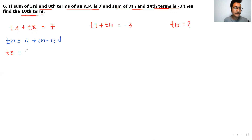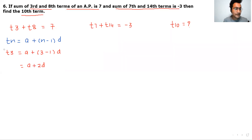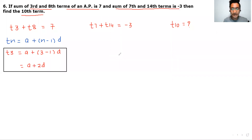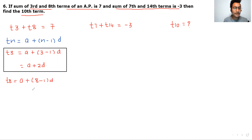T3 is equal to A plus 3 minus 1 multiplied with D, which gives T3 equals A plus 2D. T8 is equal to A plus 8 minus 1 multiplied with D, so T8 equals A plus 7D.